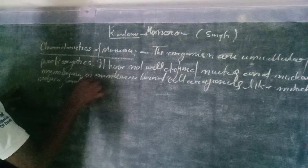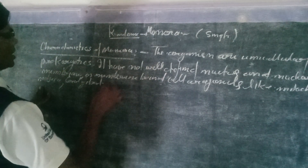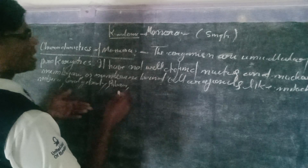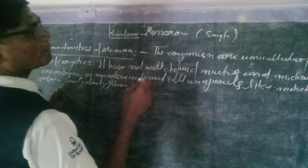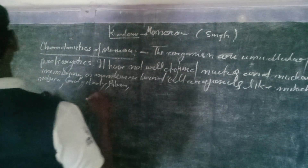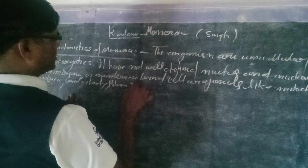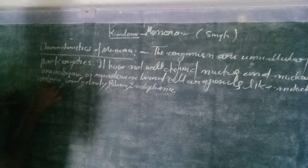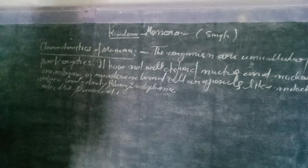Monera lack membrane-bound organelles including mitochondria, Golgi bodies, ribosomes, and endoplasmic reticulum. So these organelles are not enclosed within membranes in these organisms.